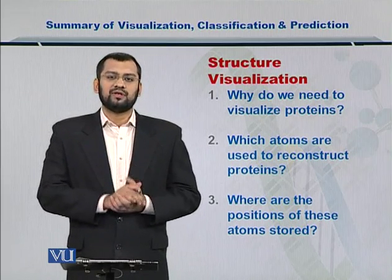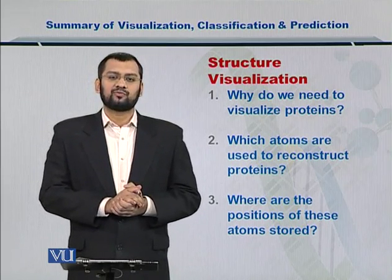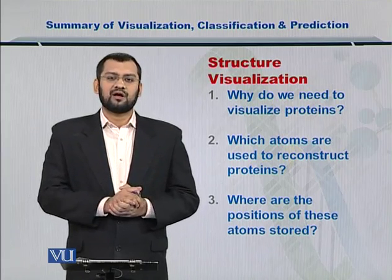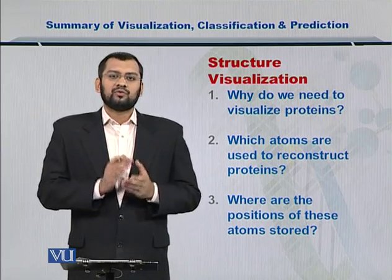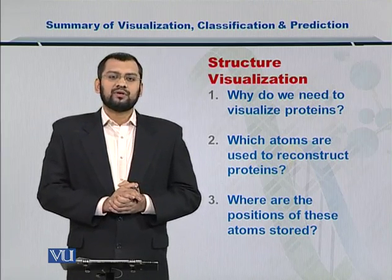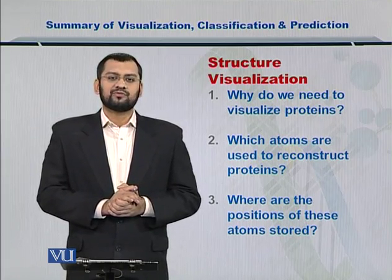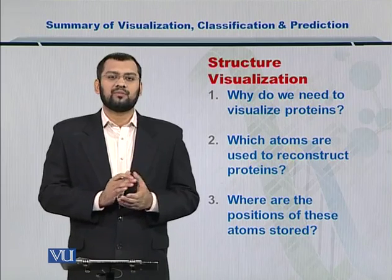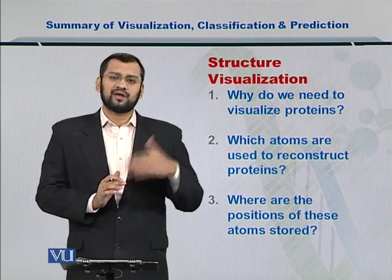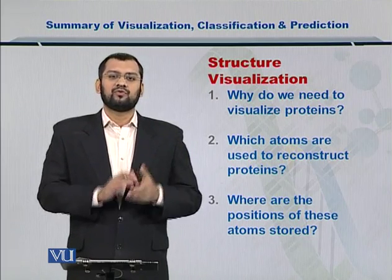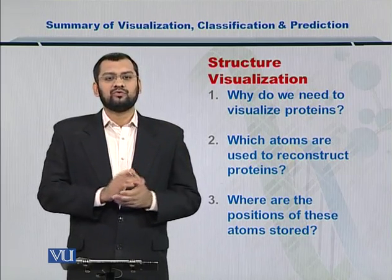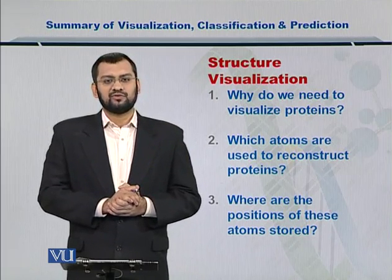But how do we get to these X, Y, and Z coordinates for each alpha carbon? To find them out, you have the PDB resource with you. The Protein Data Bank provides you with the alpha carbon coordinates, besides other information, for every protein whose structure is known.